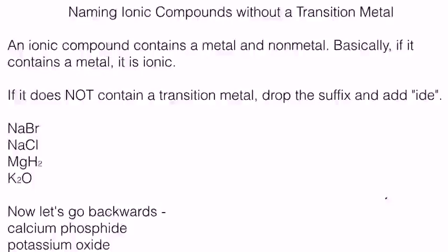All right, guys. This is a video on naming ionic compounds without a transition metal in it. Remember, the transition metals are in groups 3 through 12 on the periodic table. So we're going to use metals that are in 1, 2, and sometimes in column 13 or 14 on the periodic table.